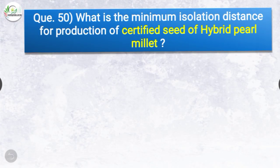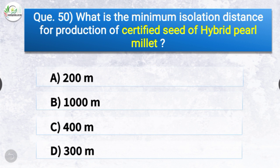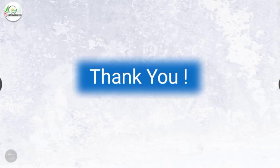Question number fifty: What is the minimum isolation distance for production of certified seed of hybrid pearl millet? The options are 200m, 1000m, 400m, or 300m. The correct answer is option A — 200m. The minimum isolation distance for production of certified seed of hybrid pearl millet is 200m. Thank you friends for watching our video. Hope you find it useful. Please subscribe to our YouTube channel for more such videos.